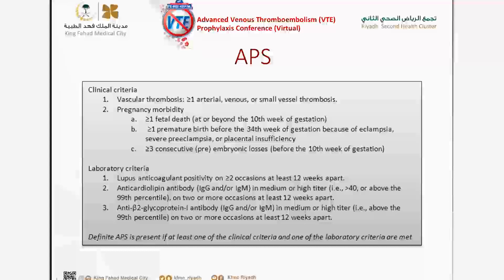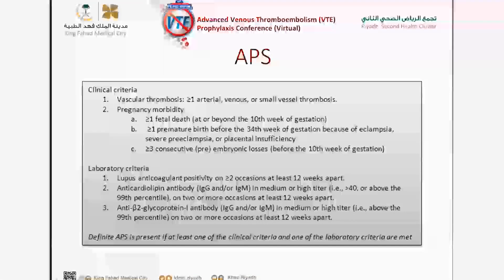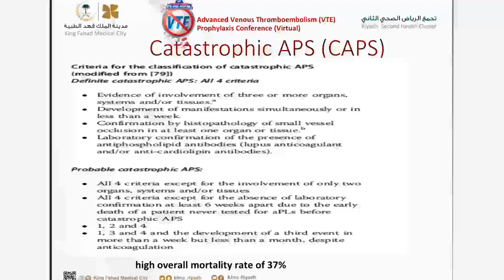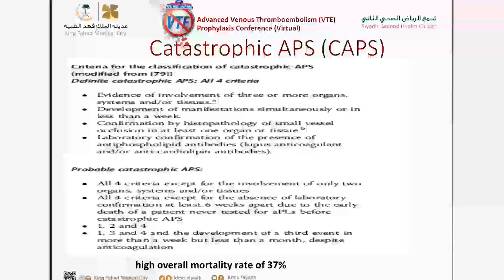Whenever we talk about APS, we must keep in mind CAPS — catastrophic APS — which, in summary, is the rapid progression of thrombotic events within a week in patients with positive antiphospholipid antibodies, with confirmed evidence of thrombosis documented by either imaging or biopsy.